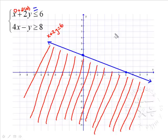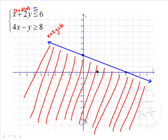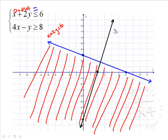We'll do it again for 4x minus y is greater than or equal to 8. We'll first find the x and y intercepts. The x-intercept will be at x equals 2, because you'll have 4x equals 8. The y-intercept — since we'll have negative y equals 8 — will be y equals negative 8. We'll connect these two dots using a solid line, because there's an equal to. It's always a good idea to label your lines, so let's label this one as 4x minus y equals 8.